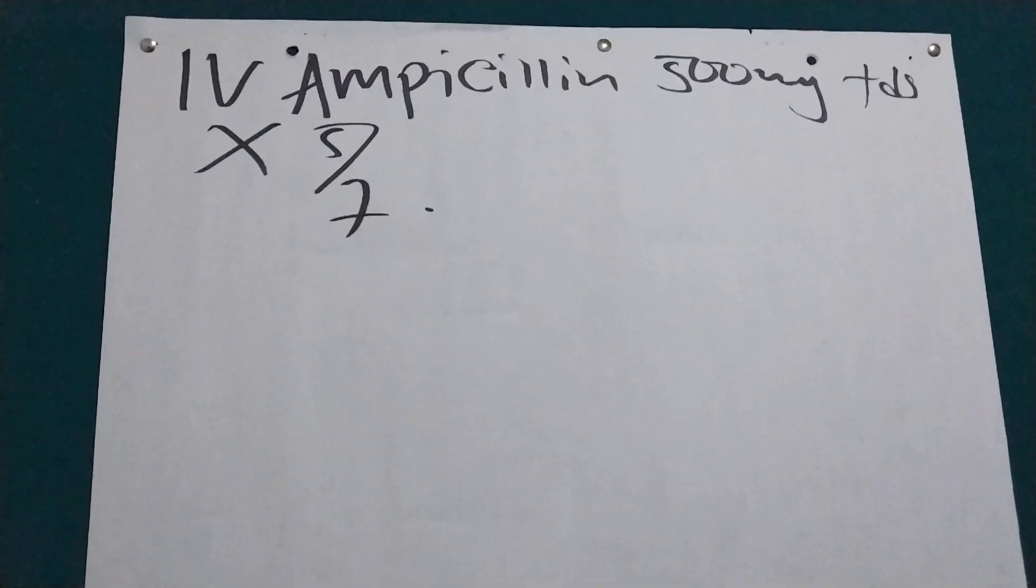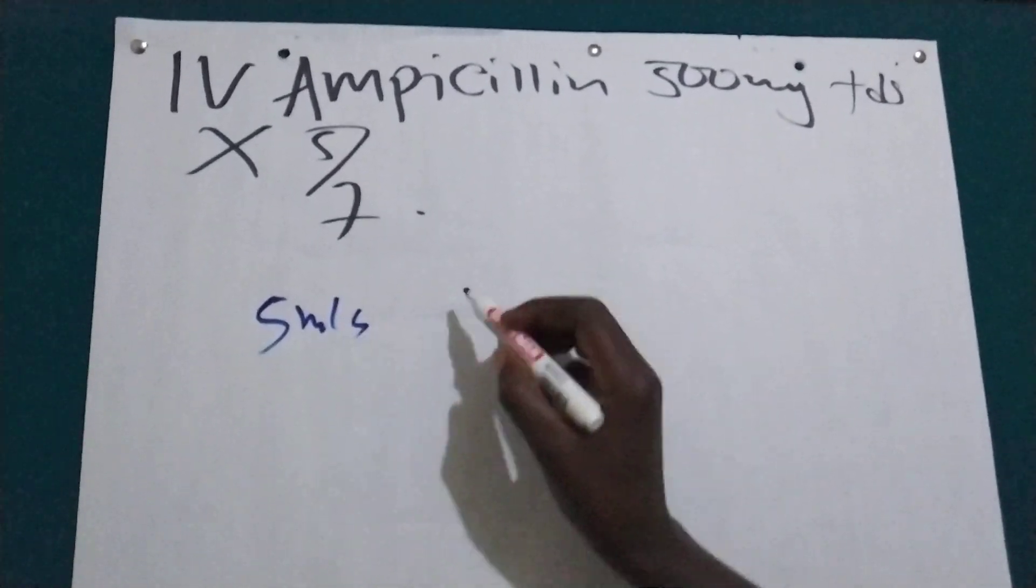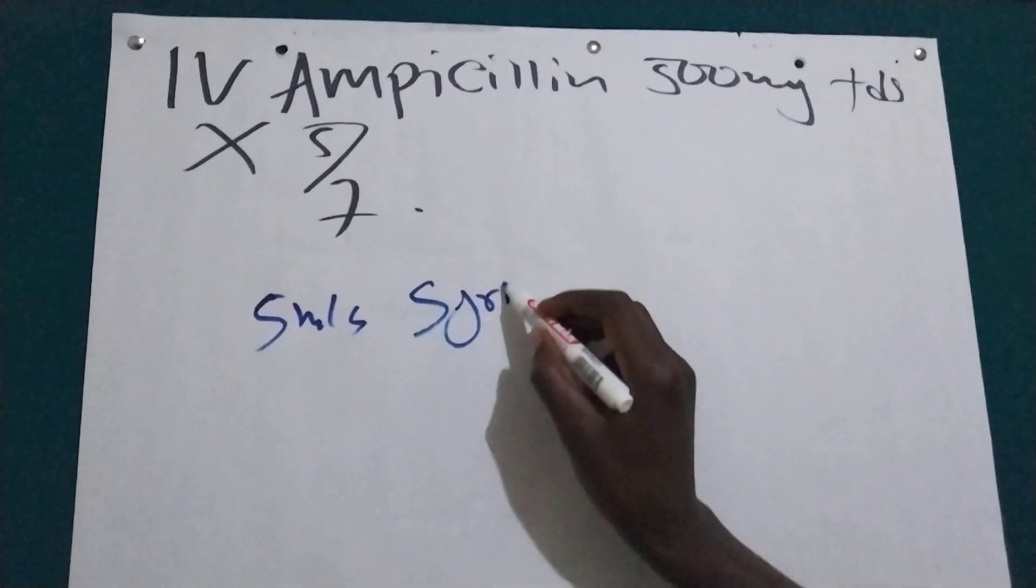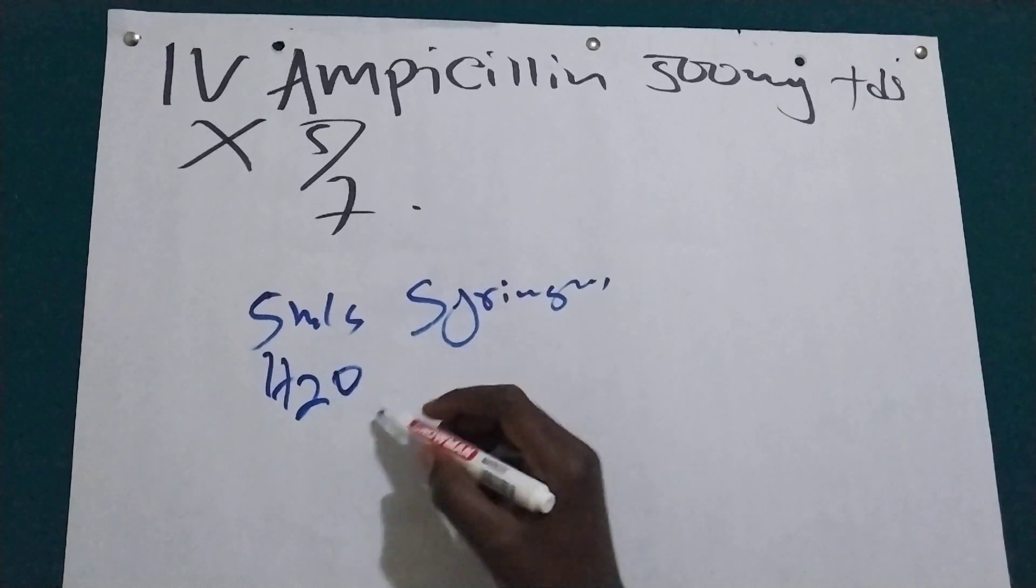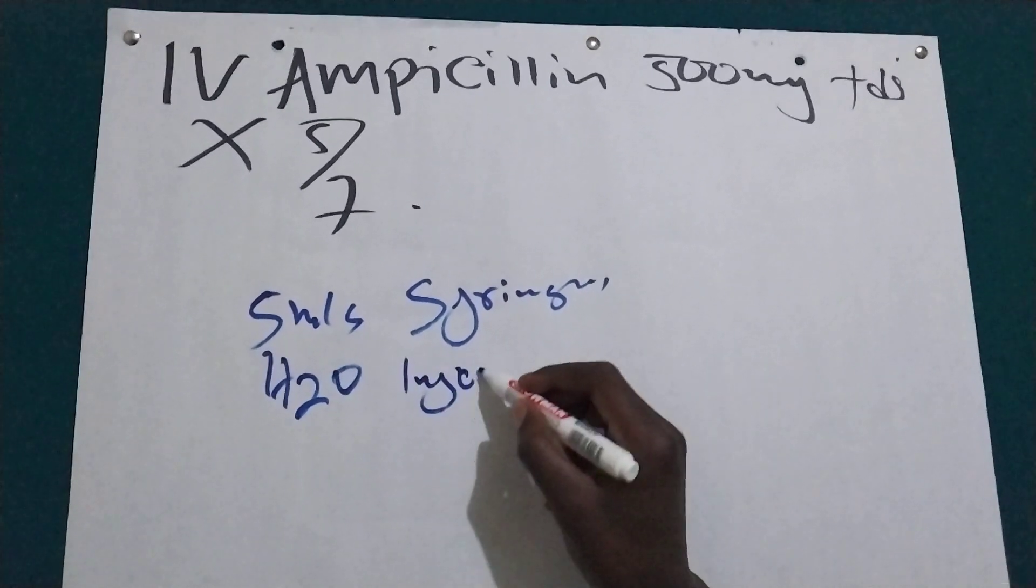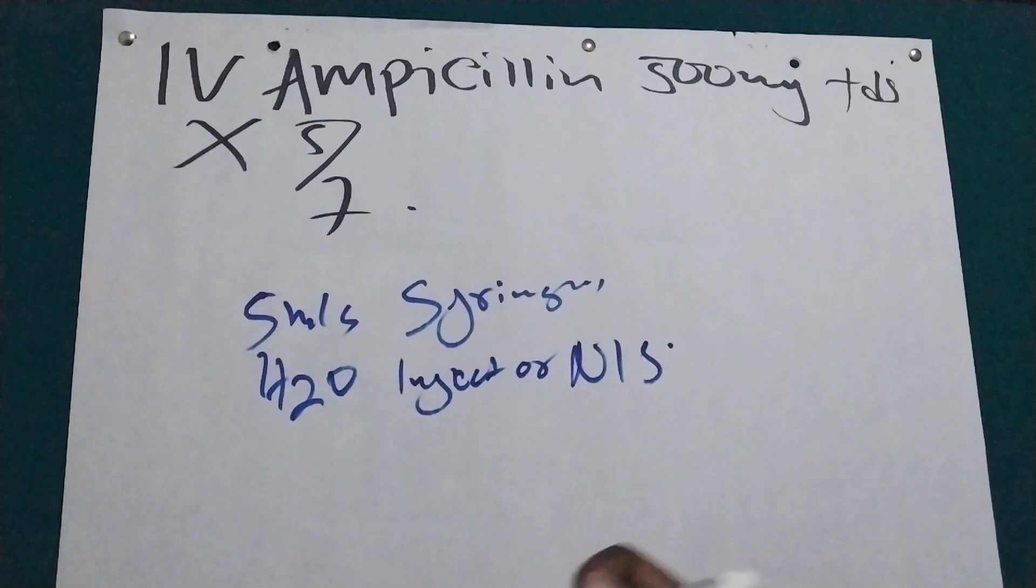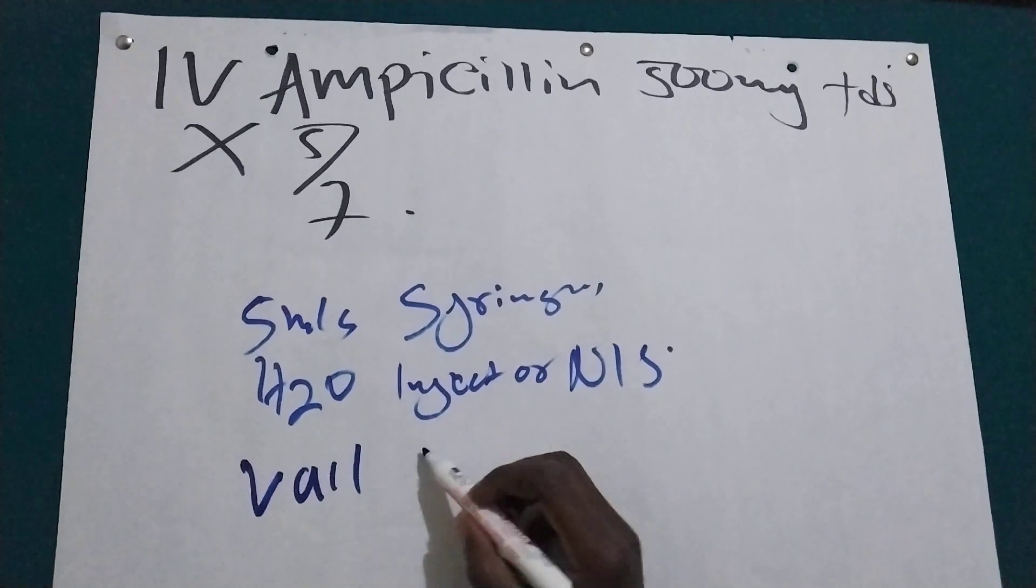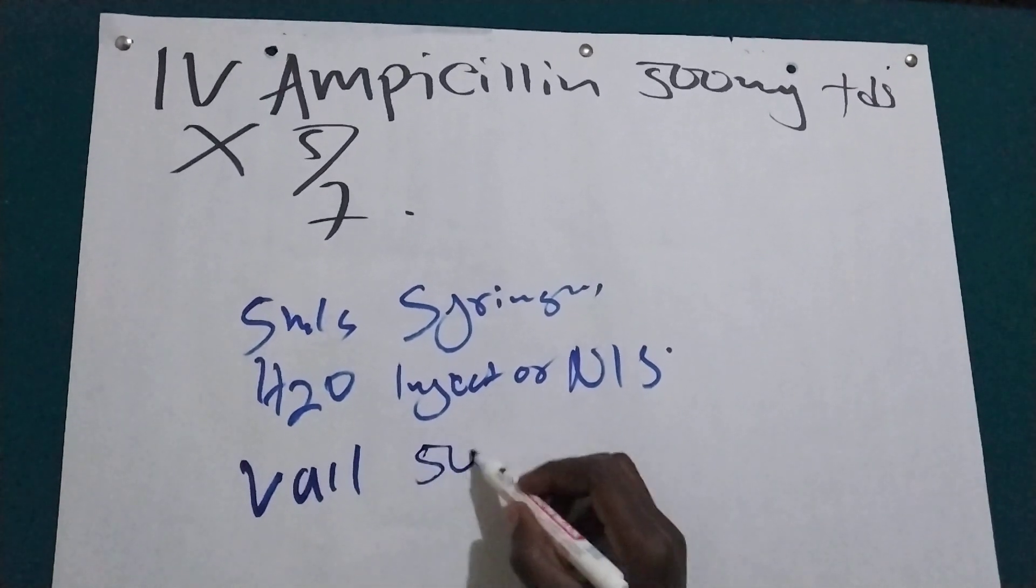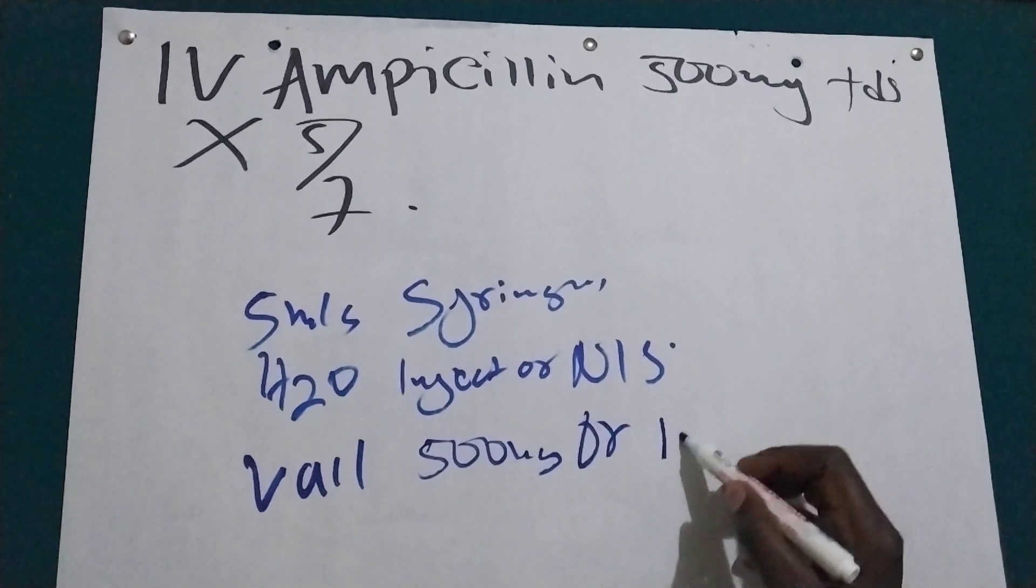So for diluting ampicillin we use a five mil syringe and water for injection or normal saline. So then for a vial of 500 milligram or one gram.